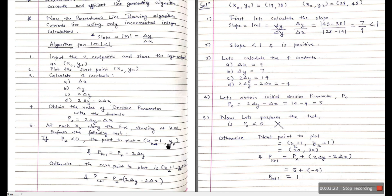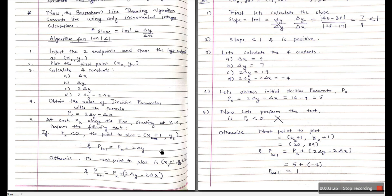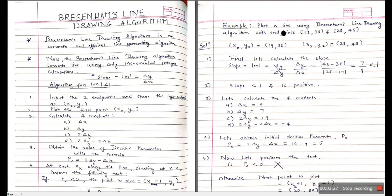Let's look at an example so you understand it better. We have to plot a line using Bresenham's Line Drawing Algorithm with endpoints (19, 38) and (28, 45).